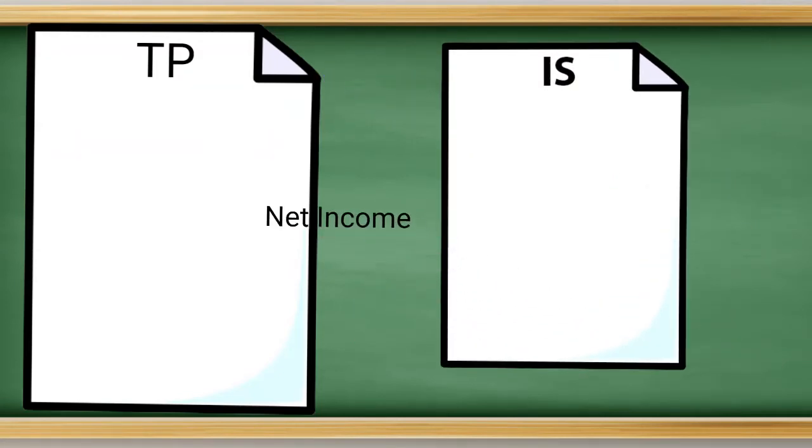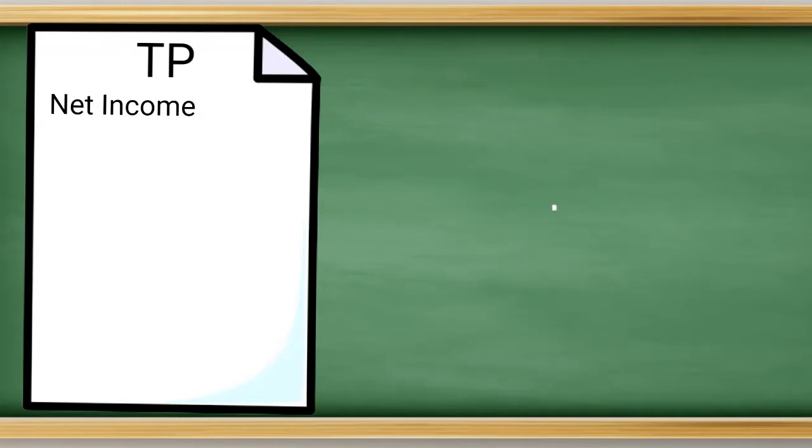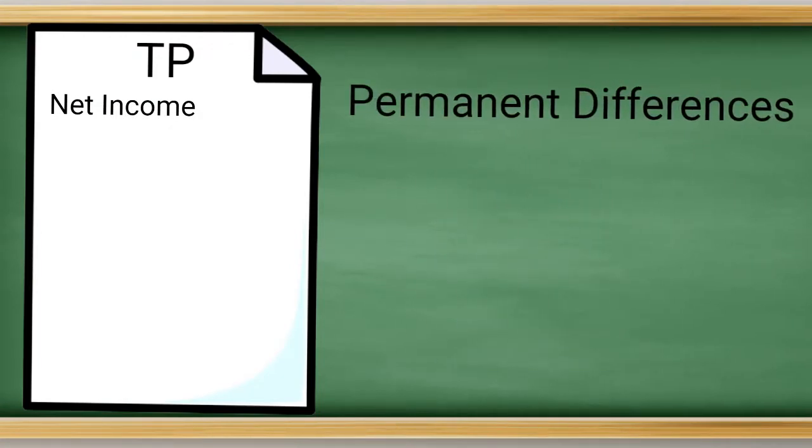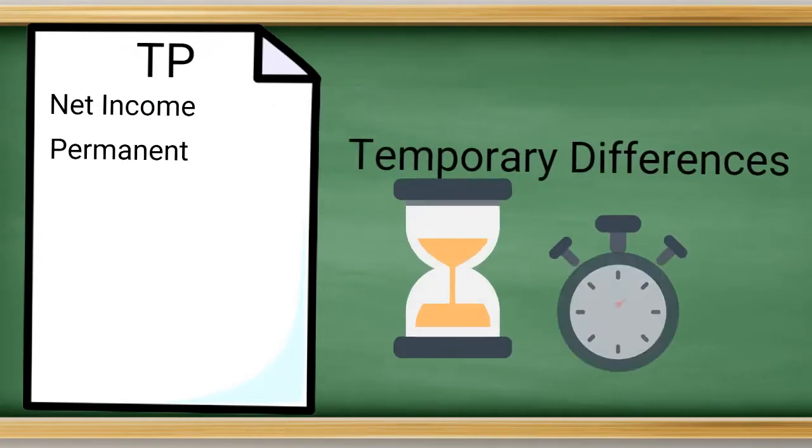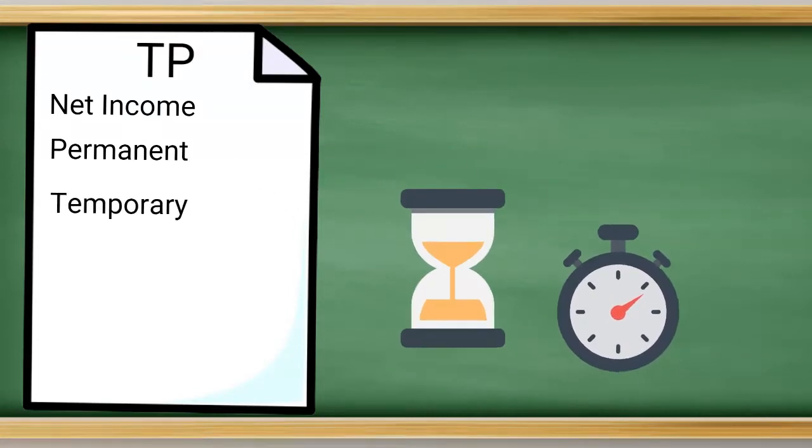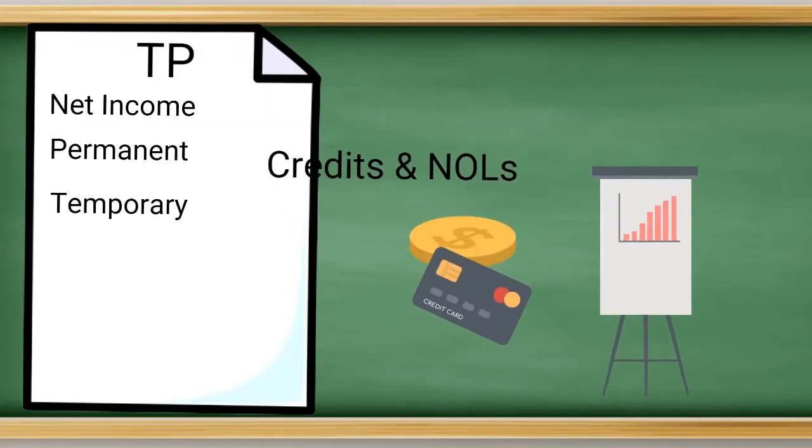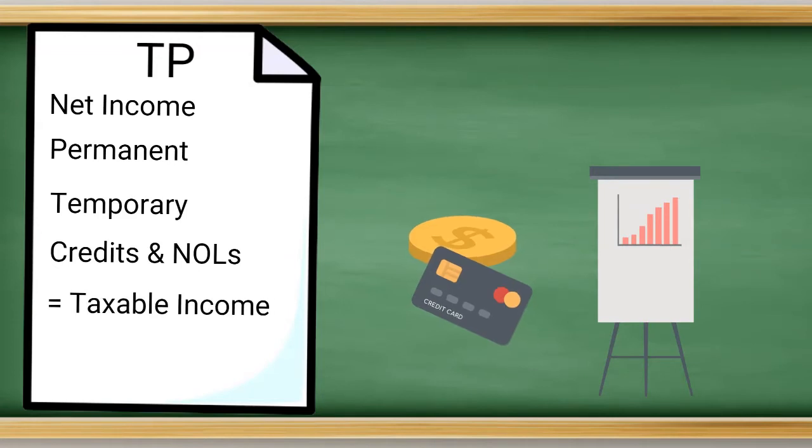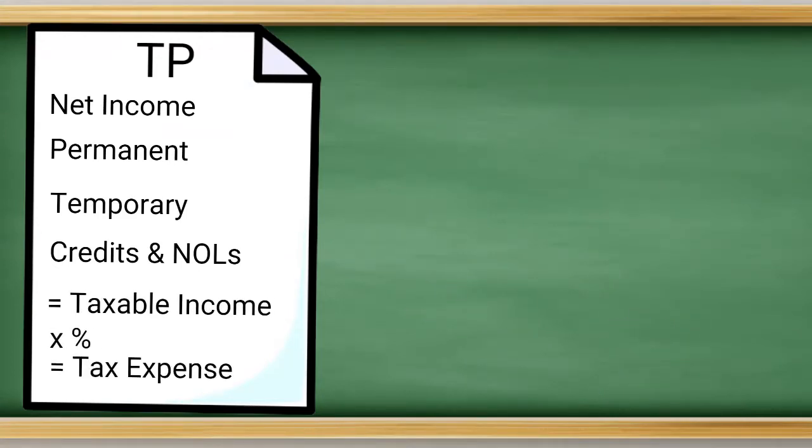At the top, you've got your net income. That comes straight over from your income statement. Next, you calculate your permanent differences. Third, you have your temporary differences. And lastly, you apply your credits or NOLs the company may have. That all adds up and you have your taxable income. Then you just apply your tax rate and you have your tax expense.